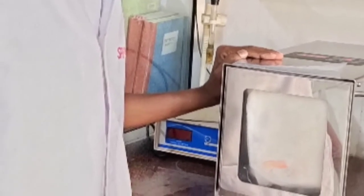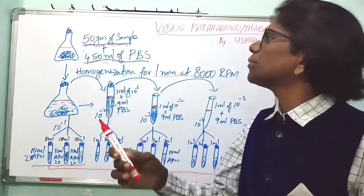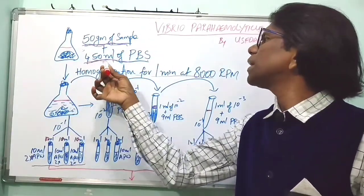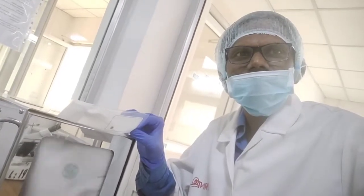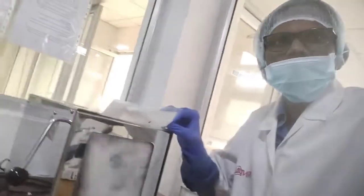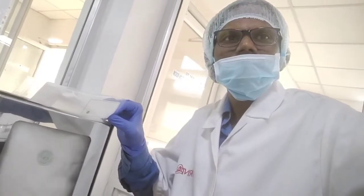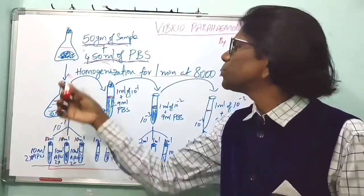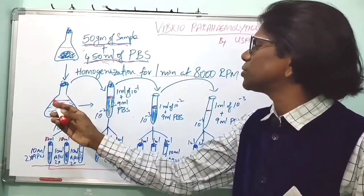Vibrio parahaemolyticus isolation procedures: Take 50 grams of seafood or meat samples, blend in 450 ml of phosphate buffer solution. Homogenate the mixture for 1 minute at 8000 rpm. After blending, we have to transfer. This is 1 to 10 dilution.